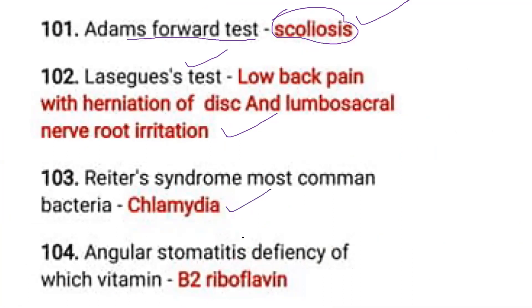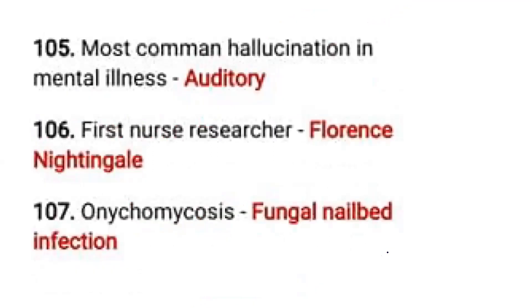Angular stomatitis is a deficiency of which vitamin? Vitamin B2, which is also known as riboflavin. This is a very important point. Angular stomatitis is associated with Vitamin B2 (riboflavin) deficiency.